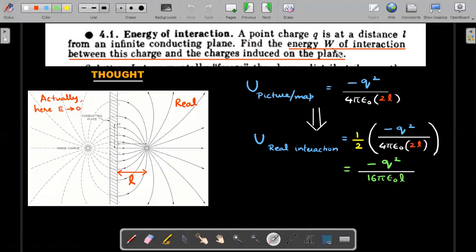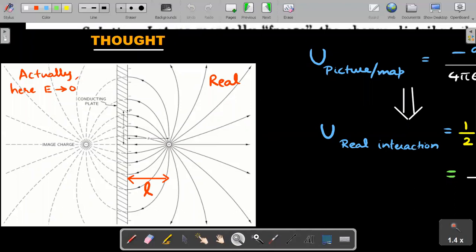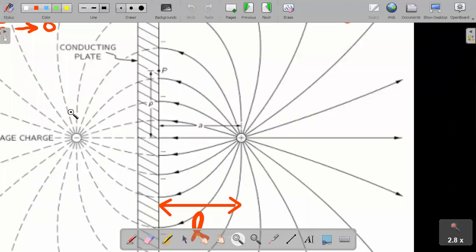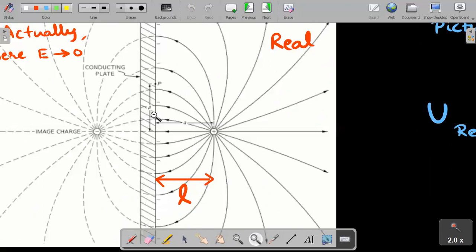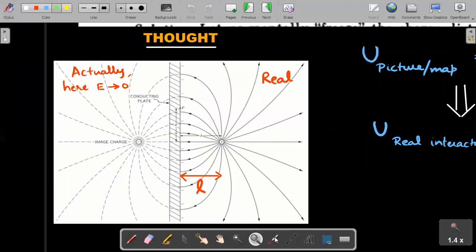Moving to the second question, the energy of interaction from the solved theory book. A point charge q at distance L, find the energy of interaction between this charge and charges induced on the plane. These particular dotted lines here are image charge field lines. They're not real, they don't exist in reality. It's just our comfort level in understanding the concept.